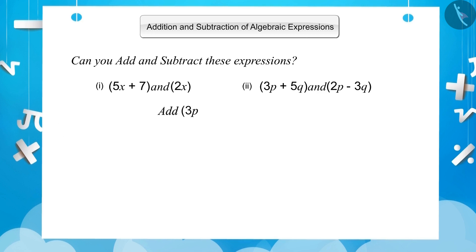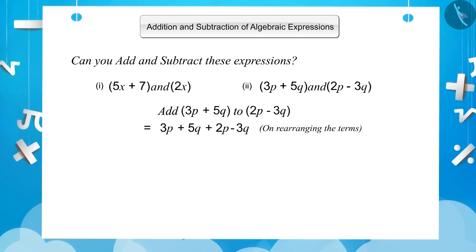Now for the sum of 3p plus 5q and 2p minus 3q. Here, 3p and 2p are like terms, and 5q and 3q are like terms. So we rearrange to group like terms together: (3p plus 2p) plus (5q minus 3q). By combining the like terms, we get 5p plus 2q.